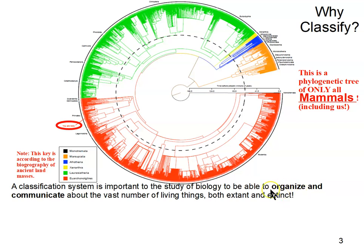99 percent of all species that have ever lived are now extinct. The 8.7 million eukaryotic species on earth now are only the living ones — there are 99 percent more that are extinct. It's totally impossible we'll ever find and classify all of them, unless some new biotechnology could somehow read out all species that have ever lived from existing DNA — which is possible but not likely.